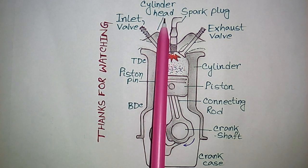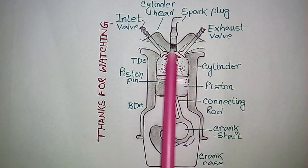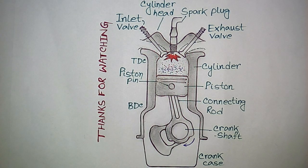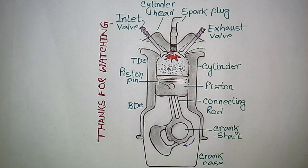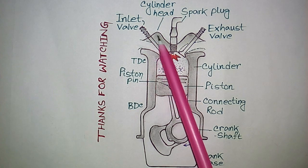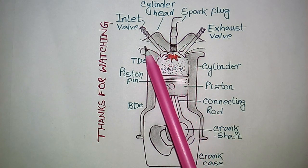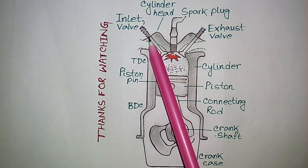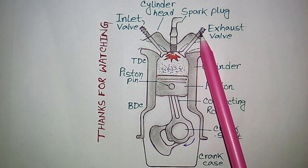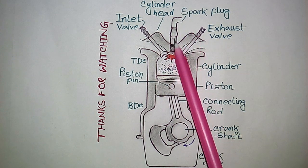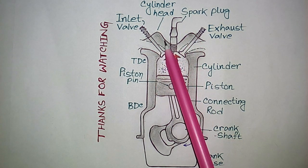Next is the cylinder head. This is the cylinder head — the top end of the cylinder is closed by the cylinder head. In the cylinder head there are two holes for the inlet valve and exhaust valve. The spark plug is also provided in the cylinder head. It is made of cast iron.